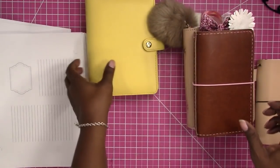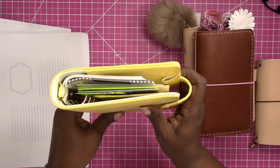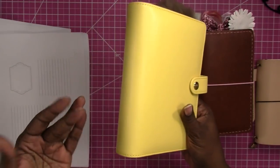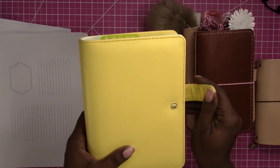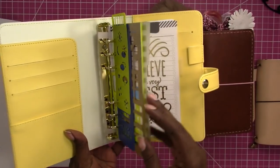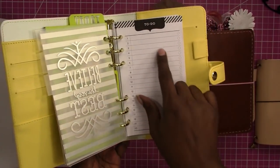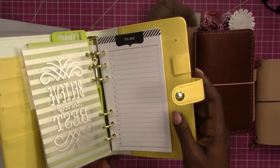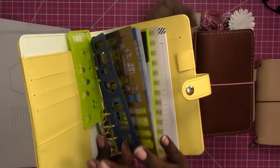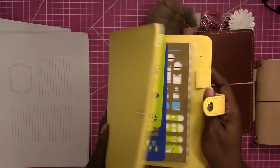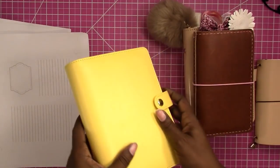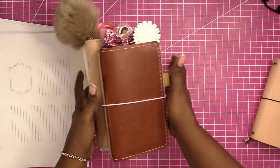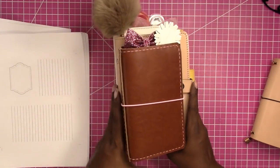And then last but not least this is the Recollections version of personal size planner. It is a little wider than the standard personal size. Their inserts are a quarter inch wider than the standard personal size. But you can still use a standard personal size insert in here. It's just a slight difference. So I'm going to put these all together so that you can kind of get a look at the size differences.